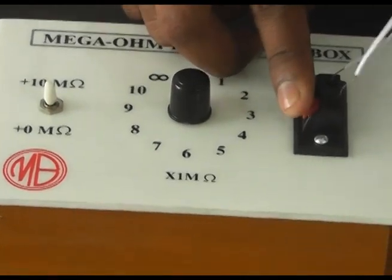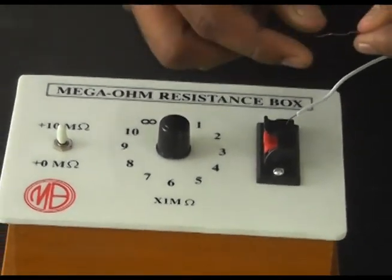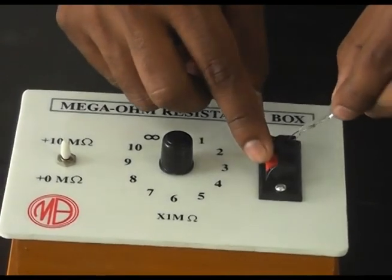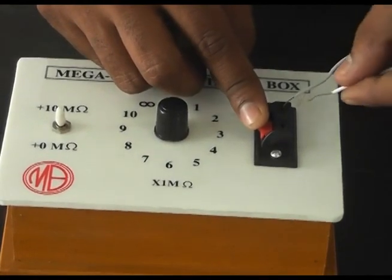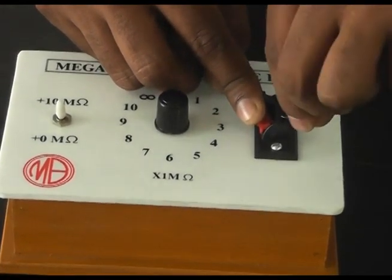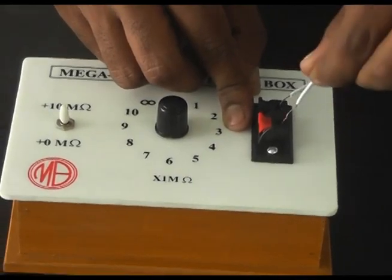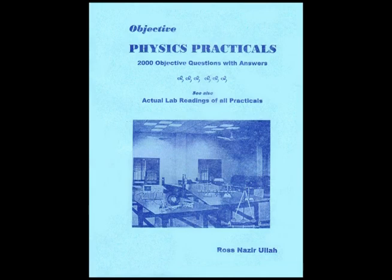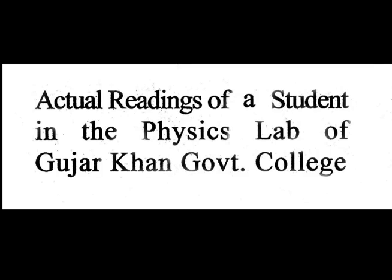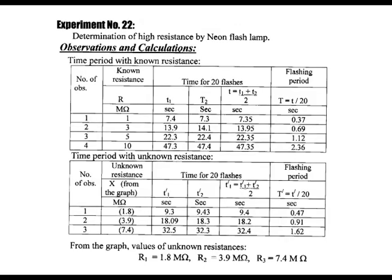The next precaution is the connections should be very tight and not loose. These are the properly tight connections. You can get the objective physics practicals from Ilmi Book Depot, Urdu Bazar, Lahore, or you can download directly from my website. Check these readings as a reference. Your readings may be different from these readings. Thank you.